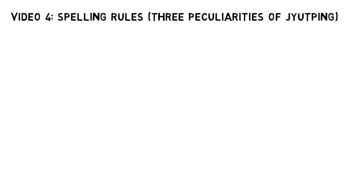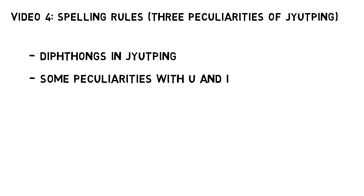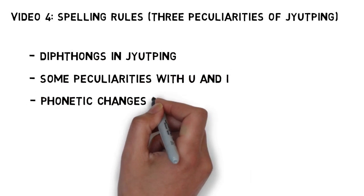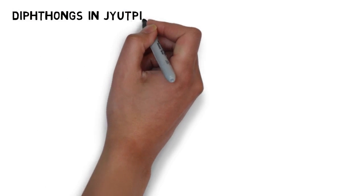In other languages, this part of the video series tends to be a good 10 to 15 minutes long. For Cantonese, this is going to be much, much shorter. Jyutping is a really well-made, logical alphabet. We're going to cover just three topics here. We'll talk about how diphthongs are written, we'll go over a couple of peculiarities with the letters U and I, and we'll cover a couple of consonants that are in the process of changing or disappearing in modern Cantonese. So first, diphthongs.